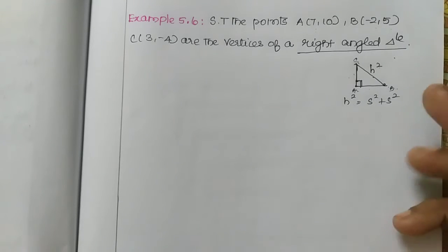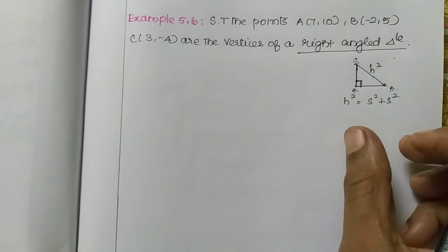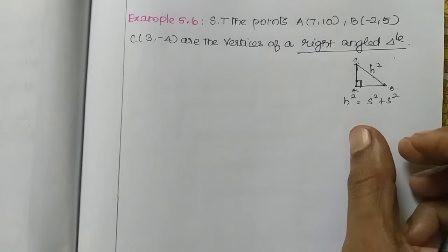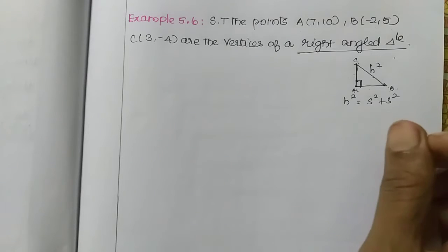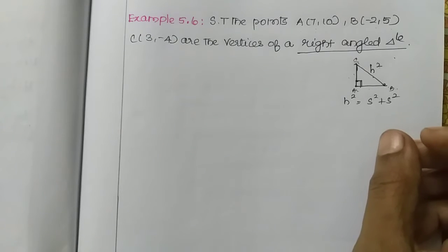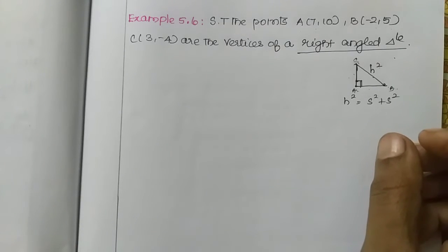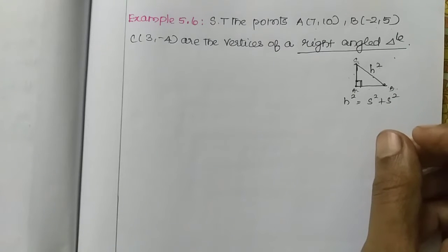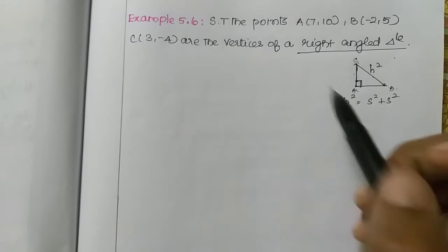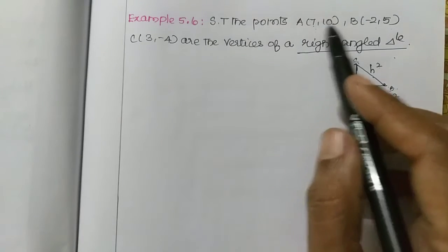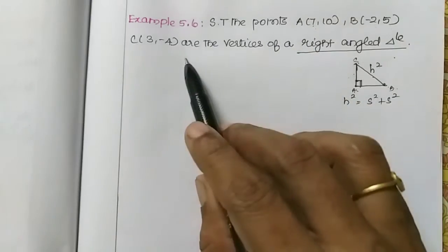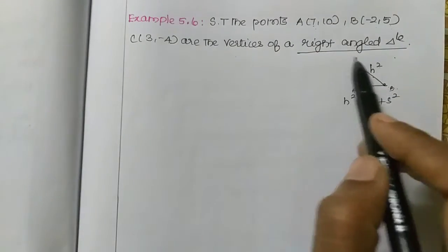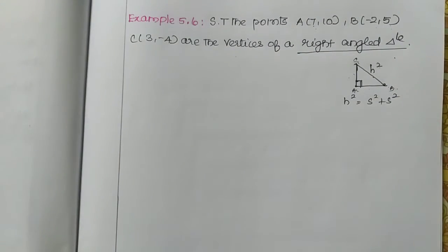So we will find the distance between the three sides AB, BC, and AC. If we have the longest side, it is the hypotenuse. The hypotenuse squared equals the sum of the squares of the remaining two sides, confirming the points are vertices of a right-angle triangle.